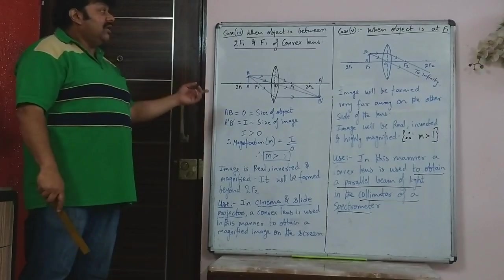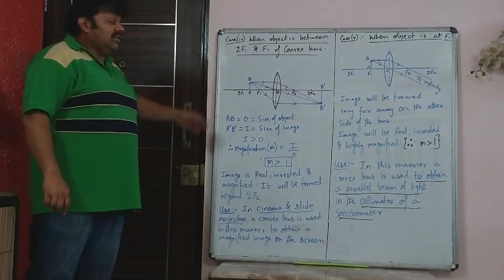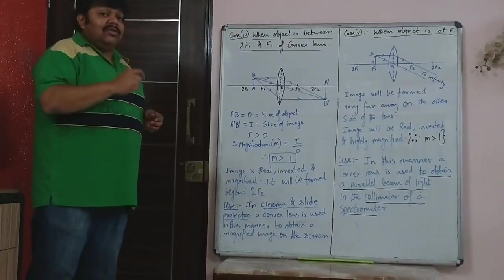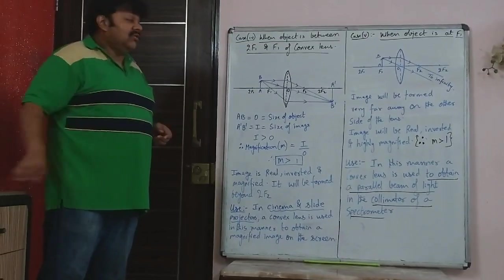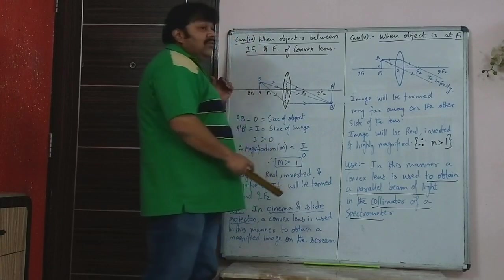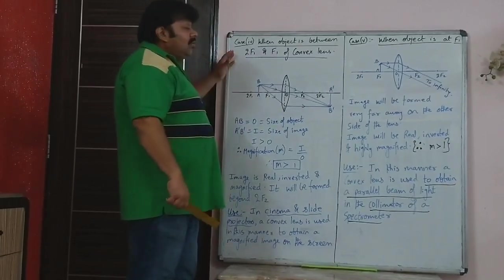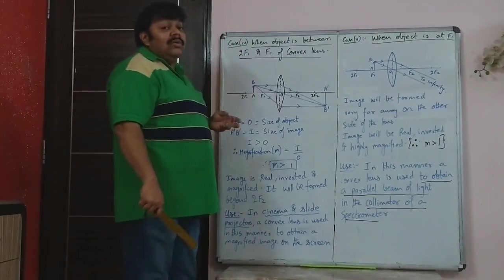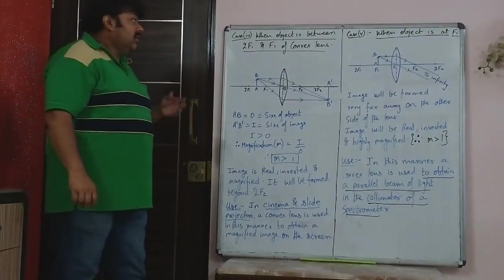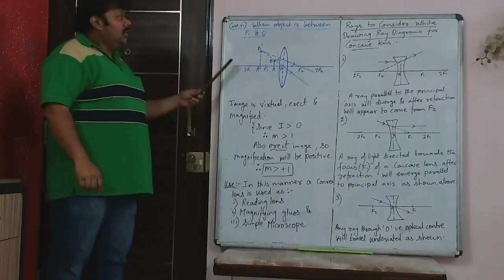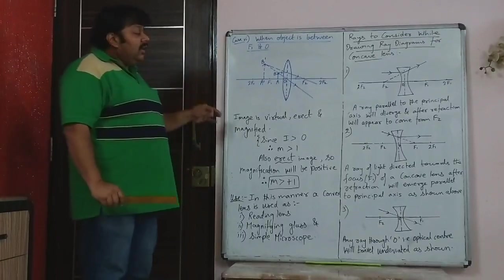We will now finish case 6, which is a very important case — used in magnifying glass and simple microscope to obtain a magnified but virtual erect image. All the images we got previously were inverted because they were from below the principal axis. The sixth case is the only case in convex lens where you get a virtual, erect, and magnified image. It has many applications — we will see case 6 now.